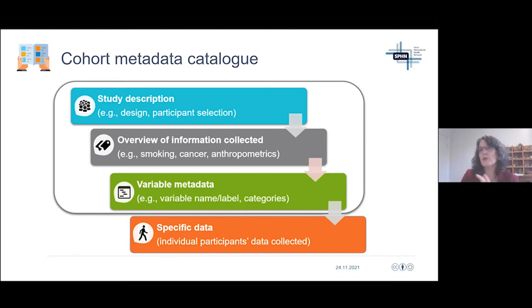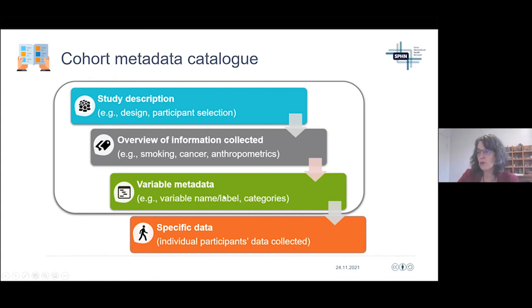Generally, the majority of catalogs sit in the first two layers, but in Maelstrom we have a deeper layer that allows more in-depth searching of information for each cohort.